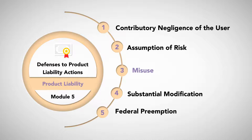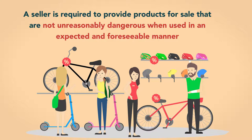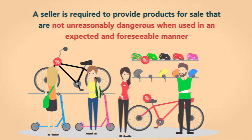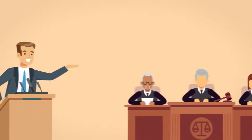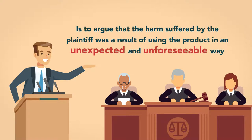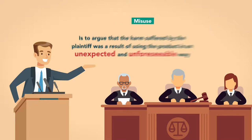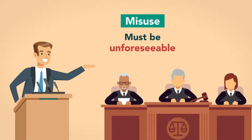Misuse: the general rule governing product liability is that a seller is required to provide products for sale that are not unreasonably dangerous when used in an expected and foreseeable manner. If a product is unreasonably dangerous when used in a common and foreseeable way, it is considered defective. Therefore, one avenue open to a defendant in a product liability case is to argue that the harm suffered by the plaintiff was a result of using the product in an unexpected and unforeseeable way. Thus, misuse can serve as a defense against liability. The misuse, however, must be unforeseeable.